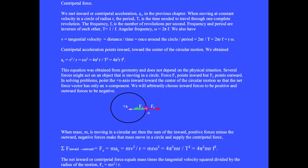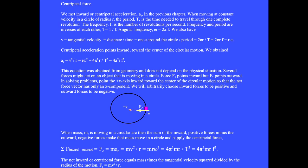When mass M is moving in a circular arc, then the sum of the inward positive forces minus the outward negative forces supply the centripetal force that makes the mass move in a circle. The outward red force minus the inward green force add up to the yellow force, which is the centripetal force making the mass go in a circle.